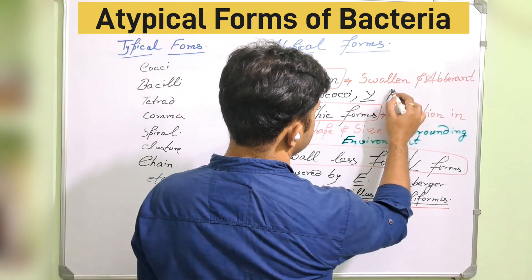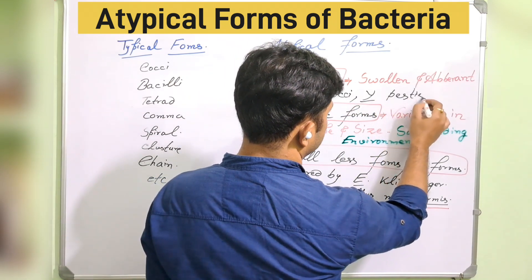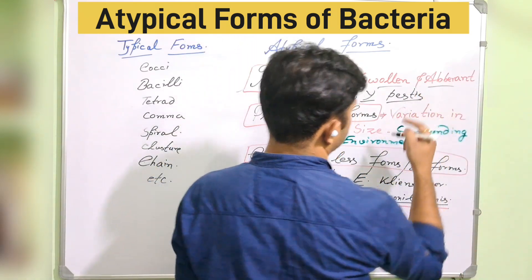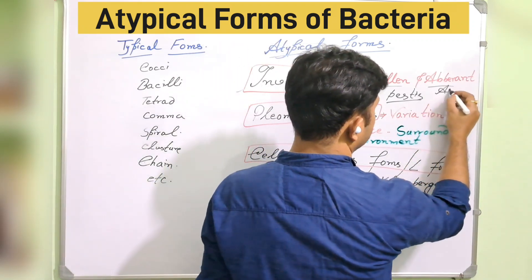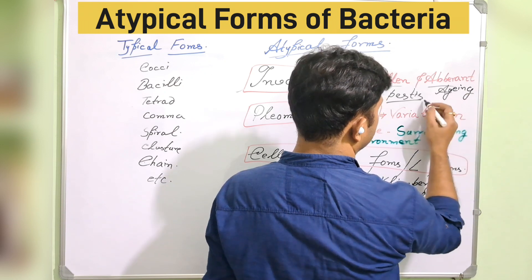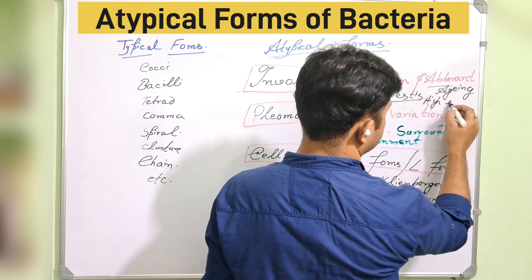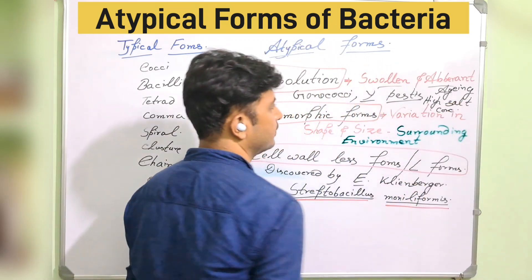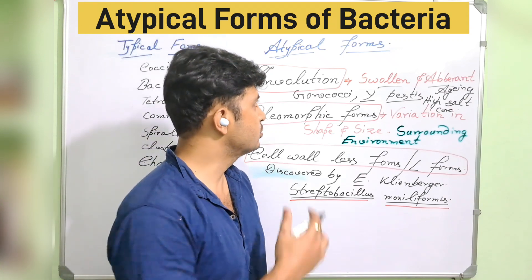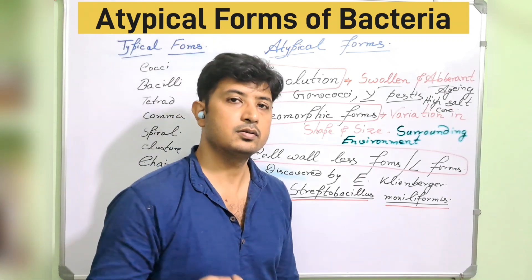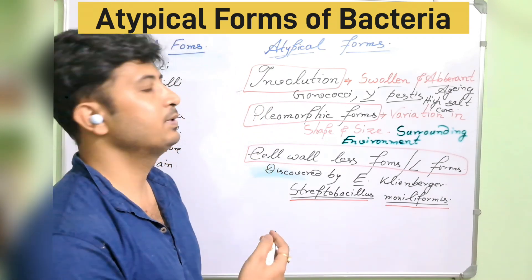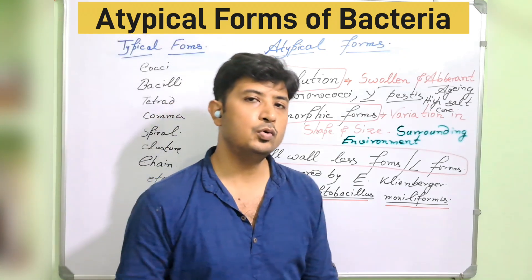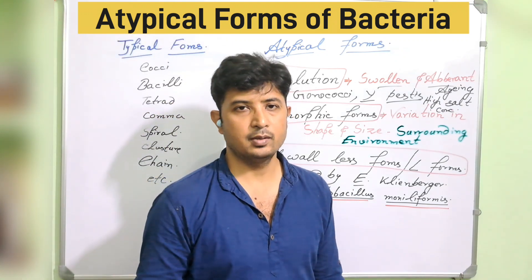Examples of involution forms are seen in Gonococci and Yersinia pestis. They show this swollen, aberrant form — not always, but when the culture in which they are growing is aging or has a high salt concentration. Under those conditions, these typically normal bacteria will show atypical involution forms.